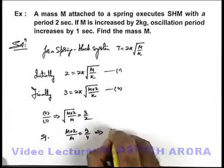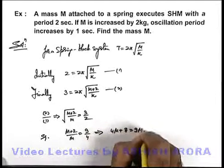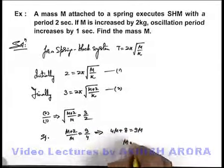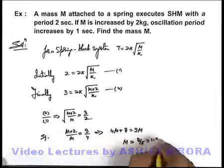On simplifying, we'll get 4M + 8 = 9M. On further simplifying, the value of M we're getting is 8/5, which is 1.6 kilograms.